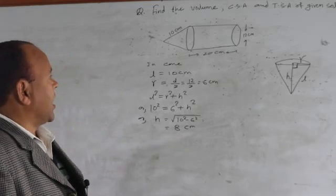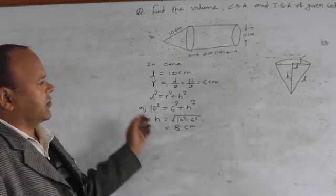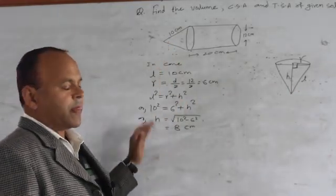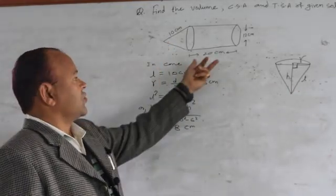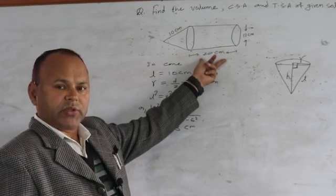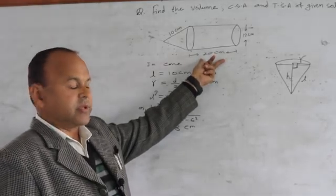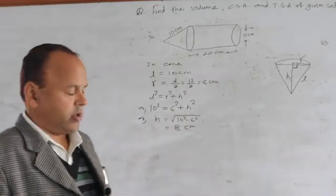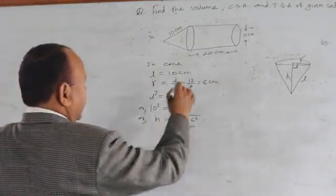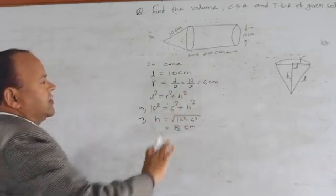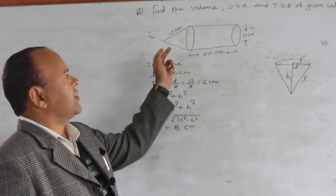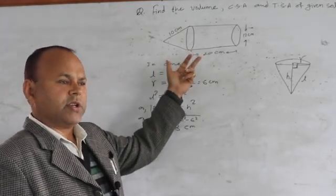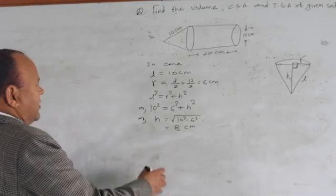The vertical height of the cone is 8 centimeter. Now all three variables of the cone are obtained. For the cylinder, this 20 centimeter is the height of the cylinder, and the radius of the cylinder is also known. So all the variables needed to find the total surface area, curved surface area, and volume of this combined object are obtained.